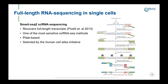Over the last years, a variety of different protocols for single cell RNA sequencing have been suggested, and optimization with respect to sensitivity, robustness, and cost-effectiveness is still ongoing. A very popular and well-established protocol is SmartSeq2, published in 2013 by Simone Picelli and others. In contrast to droplet-based methods, SmartSeq2 allows for full-length transcript sequencing. On the right you see an overview of the individual steps of the protocol from the original publication.